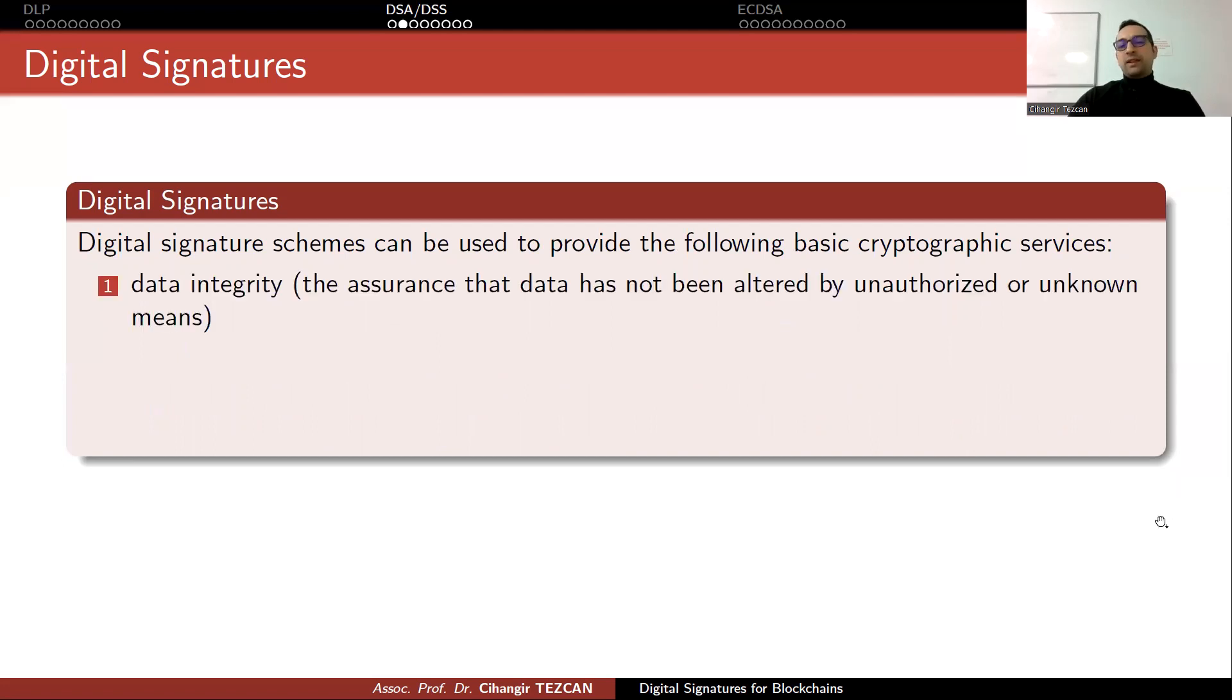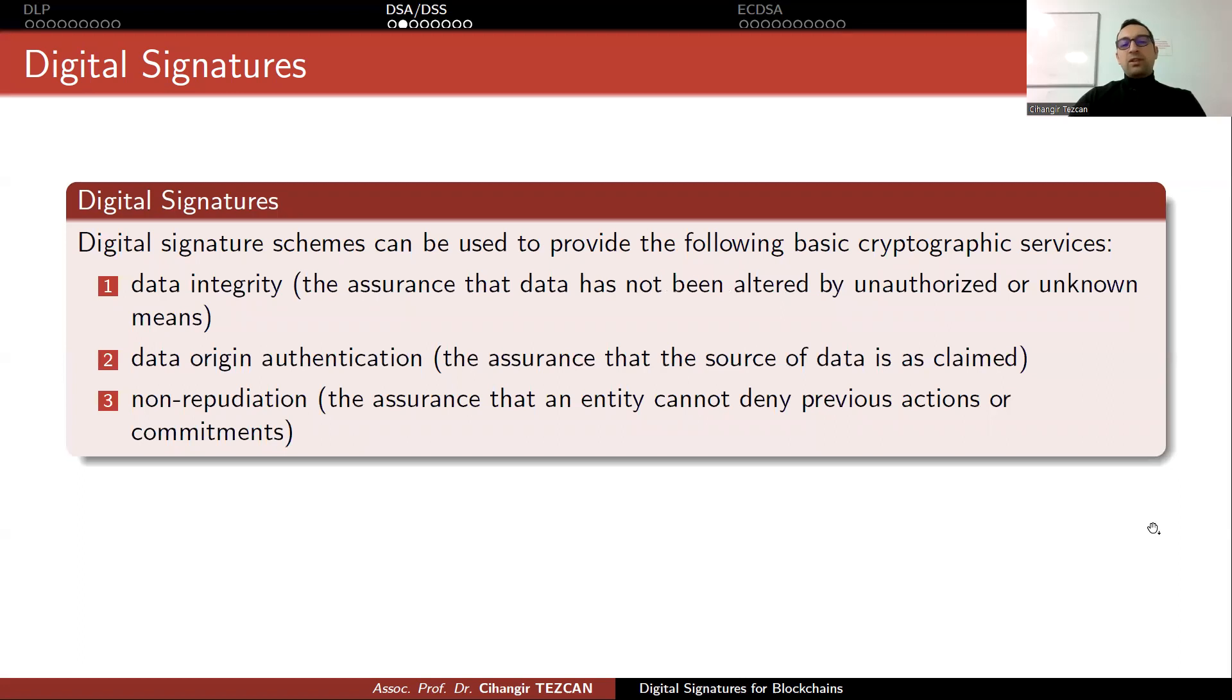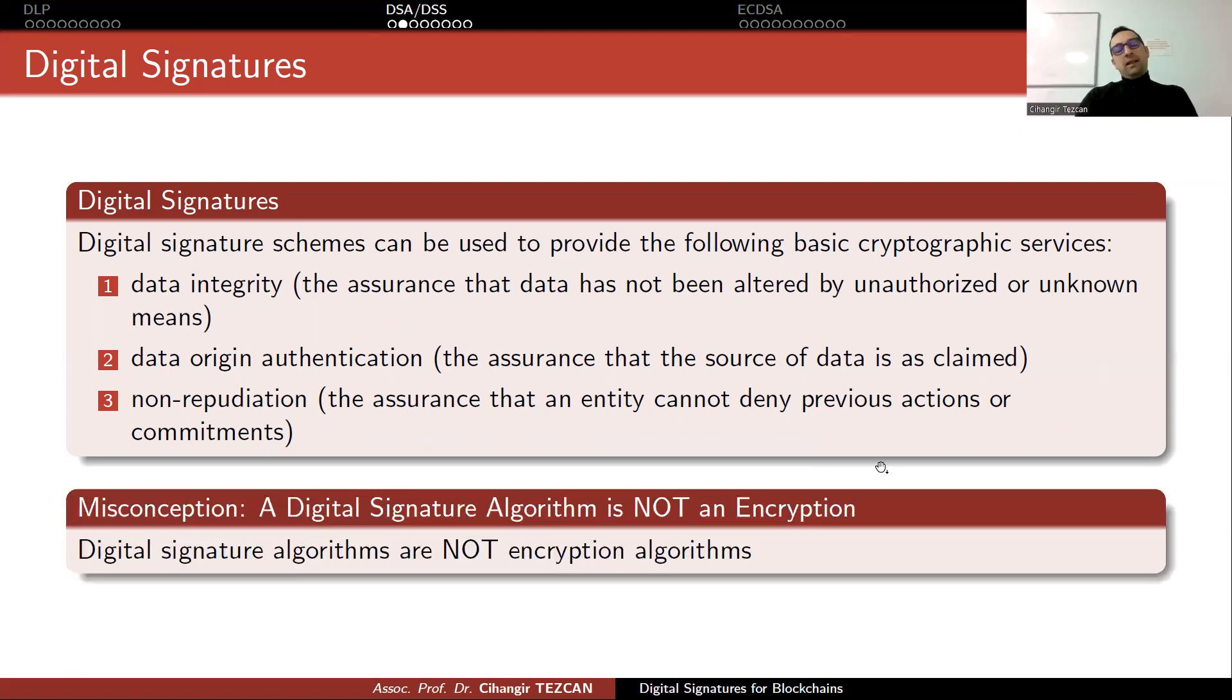Signature schemes can be used to provide the following basic cryptographic services: data integrity, the assurance that data has not been altered by unauthorized or unknown means; data origin authentication, the assurance that the source of data is as claimed; non-repudiation, the assurance that an entity cannot deny previous actions or commitments. This is what we use in blockchains or cryptocurrencies, because when somebody makes a transaction they sign it so this way they cannot repudiate it later.